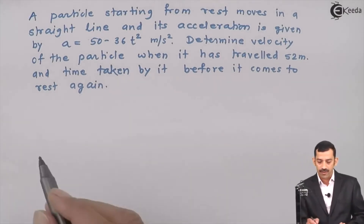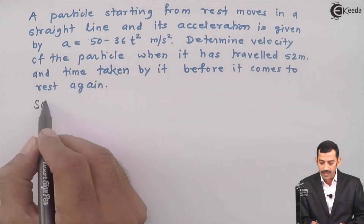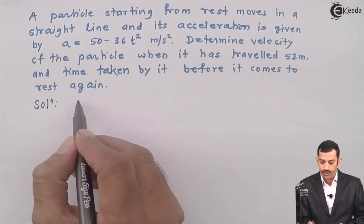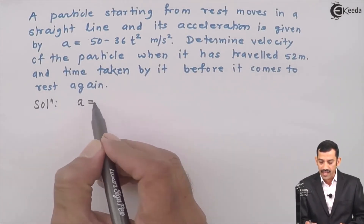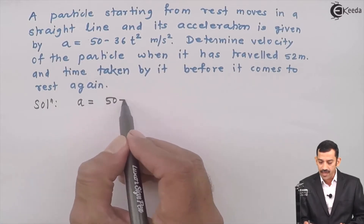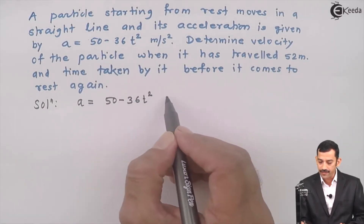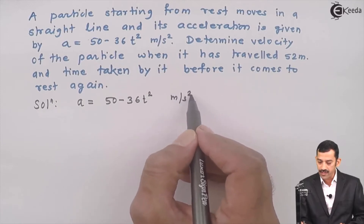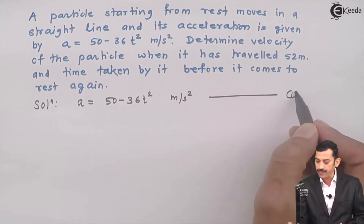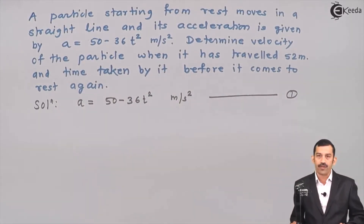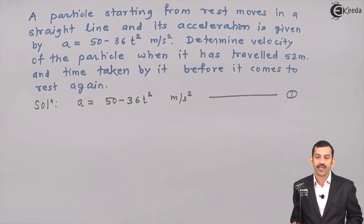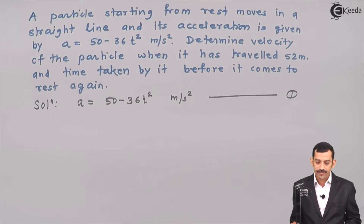We start from the given data. The first equation we know is acceleration a = 50 minus 36t² meters per second squared — equation number one. When solving any problem, understanding what relation is given and what is required is very important. Acceleration is given as a function of time t, meaning we know the relation between acceleration and time.